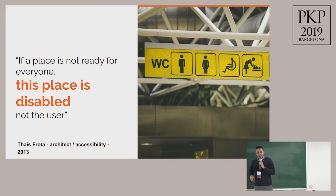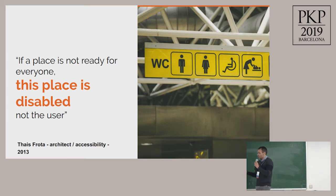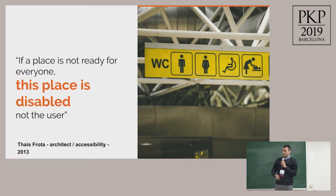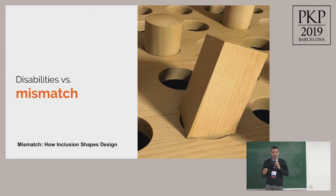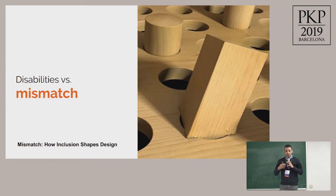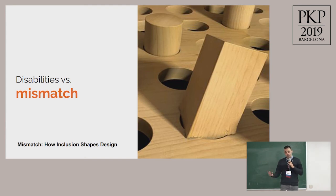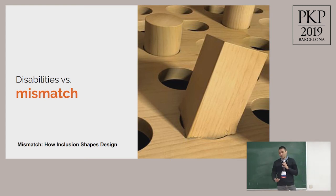An architect in my country who is an accessibility specialist for buildings told me that if a place is not ready for everyone, the place is disabled — not the user, not the person. Disability is a term we don't fully realize. We're talking about mismatch. At some point in your life, you'll experience a mismatch between your needs and a product's design. For example, now I need glasses for reading, so it's a mismatch if I can't read my smartphone — I need to increase the font size.